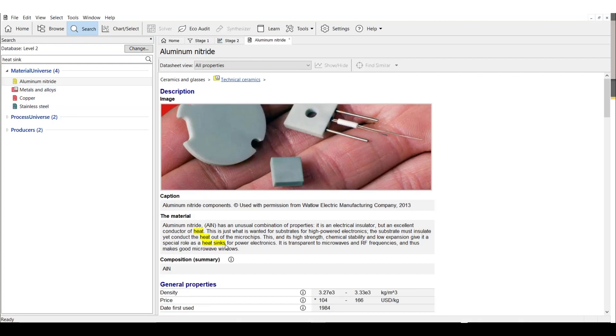I can see in the material record for aluminum nitride that it's commonly used for a heat sink, thanks to the fact that it is both an electrical insulator and a thermal conductor, our rare combination.